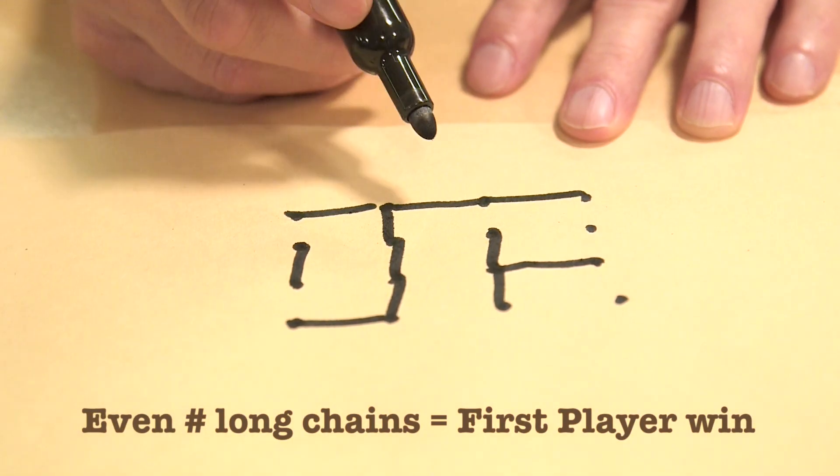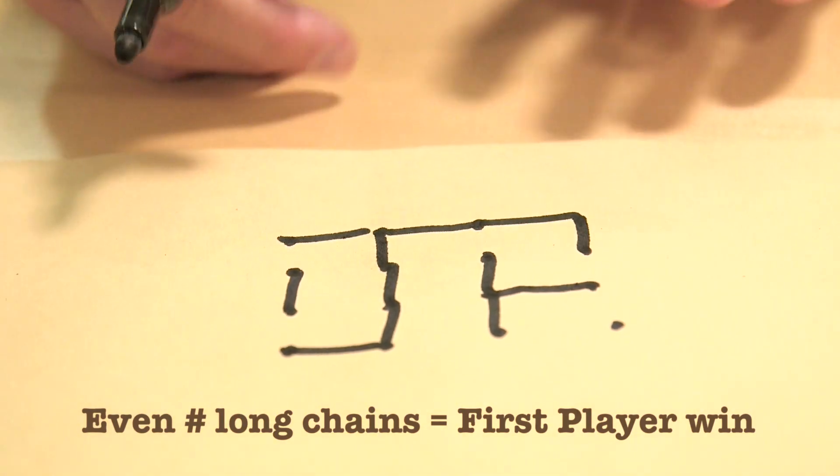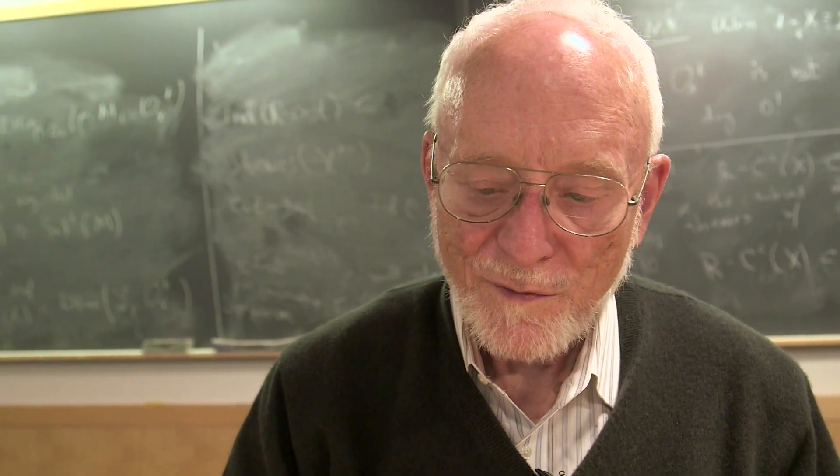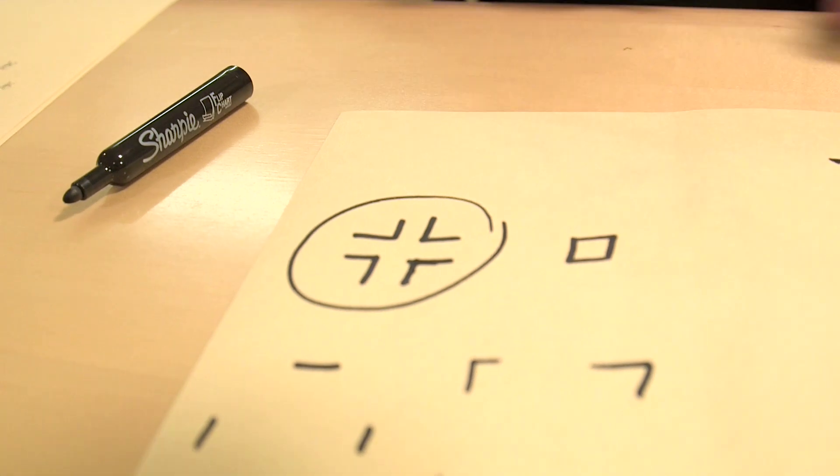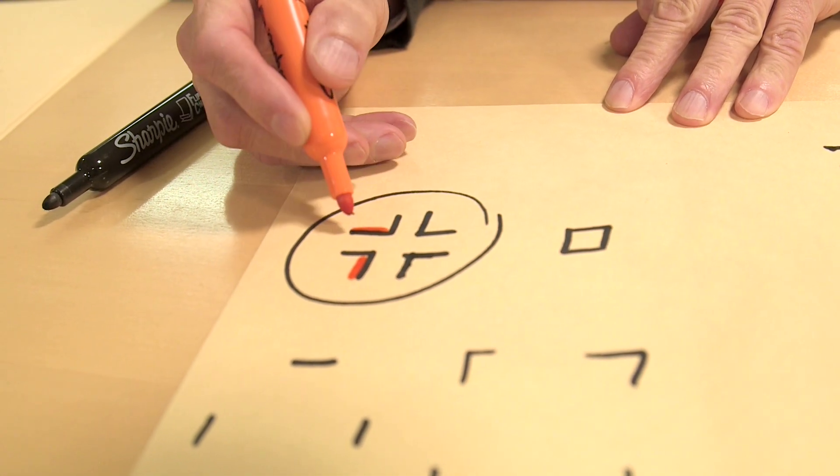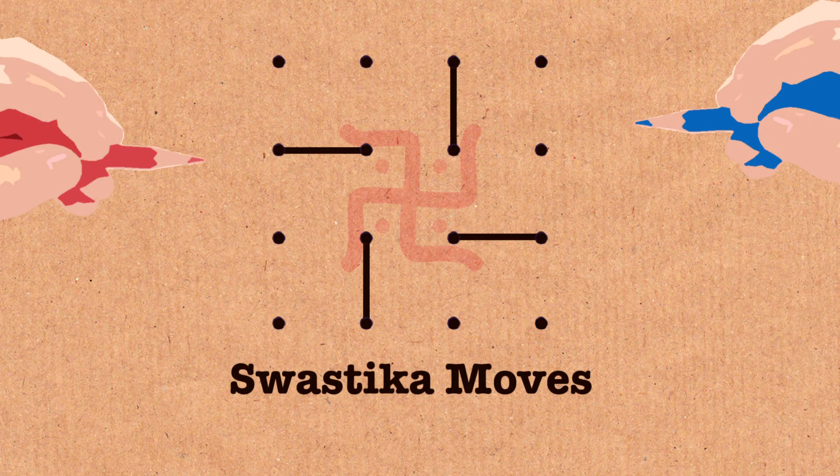Now the second player could have won and the key to the second player's winning is to stop the side chain. And the way to do this is to play spokes, these are the moves you want. I prefer to do it in a swastika pattern so that these particular moves, this set of moves is very good because they stop all side chains. There's no way that any side chain could be made.